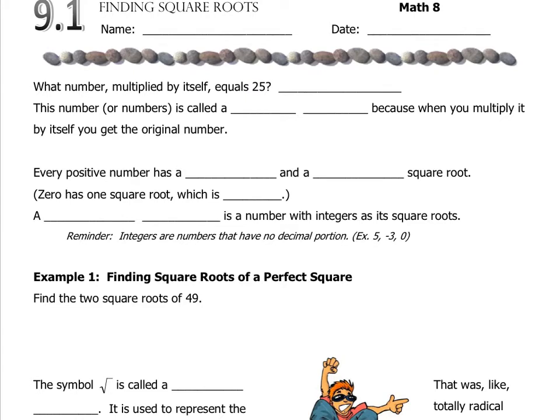The first question is: what number multiplied by itself equals 25? In your head you might have said 5, which is not wrong, but it's just not complete. It could also be negative 5, and the reason is that a negative times a negative is a positive, so negative 5 times itself gives us positive 25. This number — or numbers in that case — is called a square root, because when you multiply it by itself you get the original number. So the square root of 25 is 5, or negative 5.